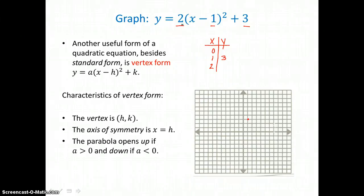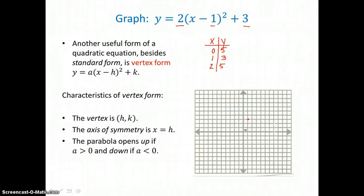1 times 2 is 2, and 2 plus 3 is 5. Now I'll put 2 in for x: 2 minus 1 is 1, 1 squared is 1, 1 times 2 is 2, and 2 plus 3 is 5 again. So I can graph the points (0, 5) and (2, 5).